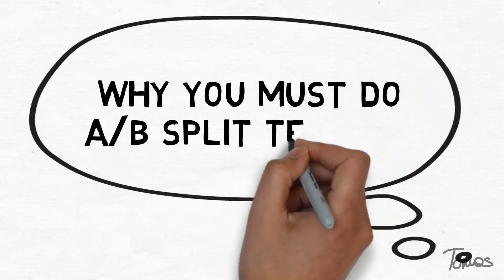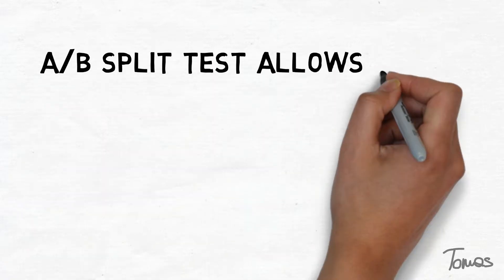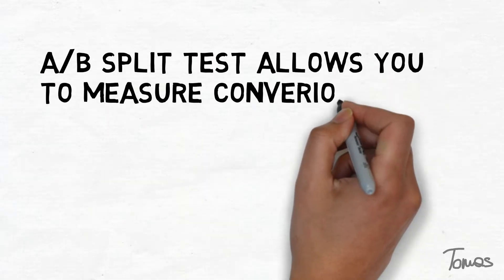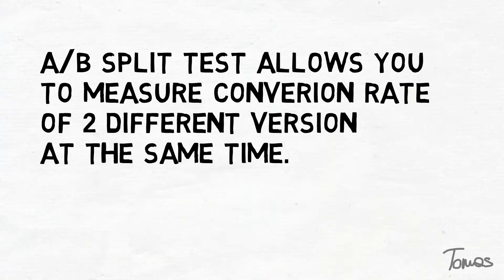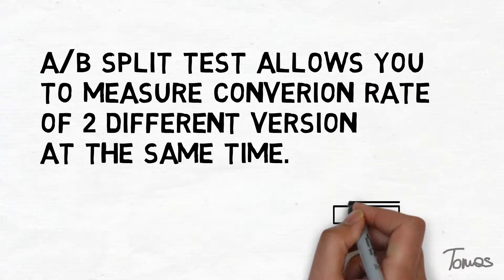A-B Split Testing allows you to measure conversion rate of two different versions of a page on your website at the same time with the same visitors.